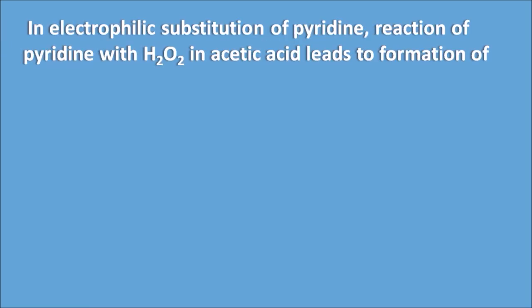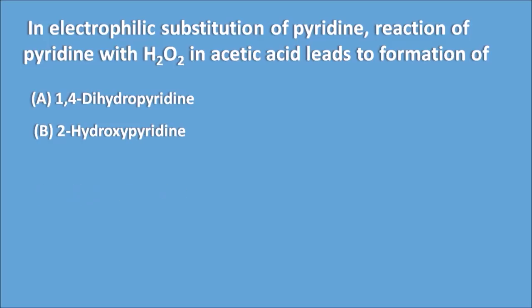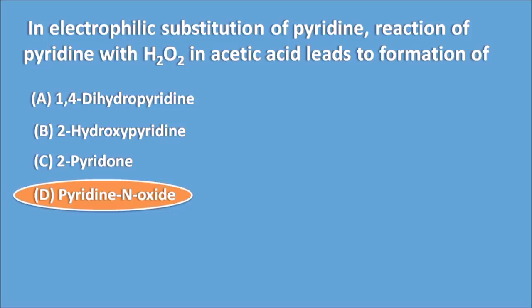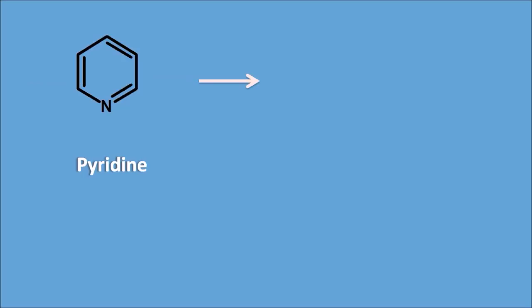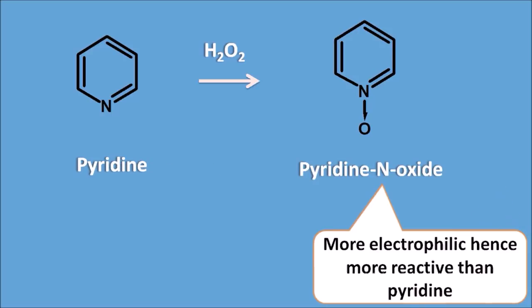In electrophilic substitution of pyridine: the reaction of pyridine with hydrogen peroxide in acetic acid leads to formation of A. 1,4-dihydropyridine, B. 2-hydroxypyridine, C. 2-pyridone, or D. Pyridine N-oxide. The right answer is Pyridine N-oxide. Pyridine reacted with hydrogen peroxide gives pyridine N-oxide, which is more electrophilic and therefore more reactive than pyridine.